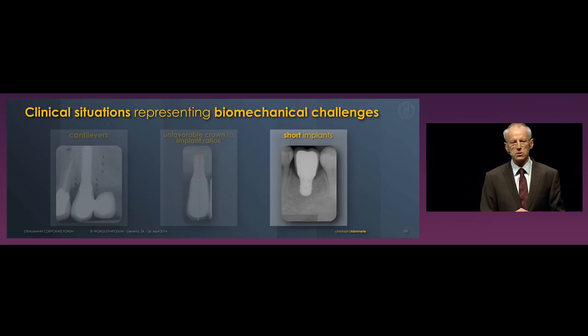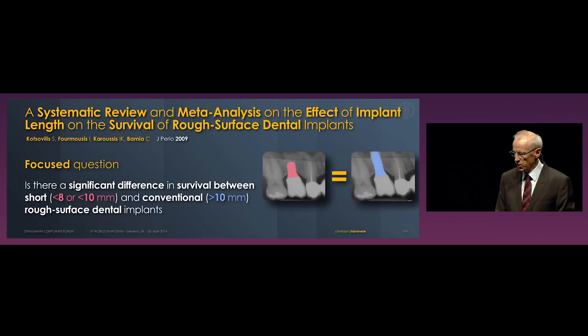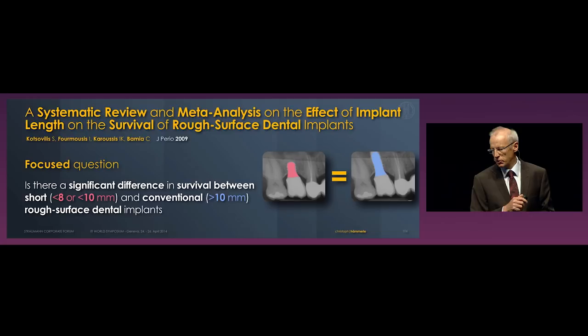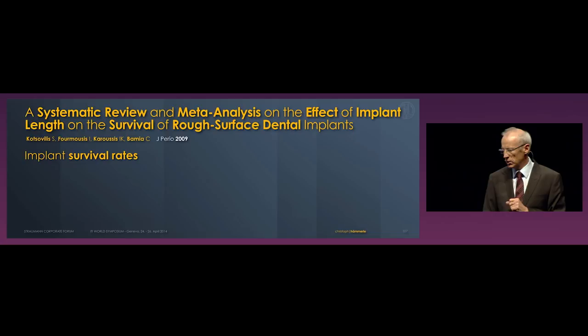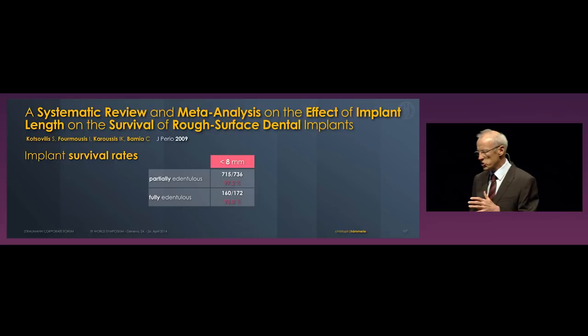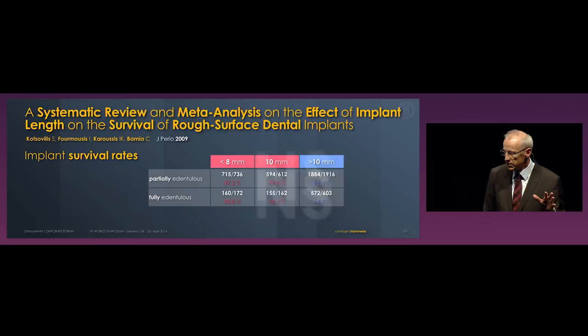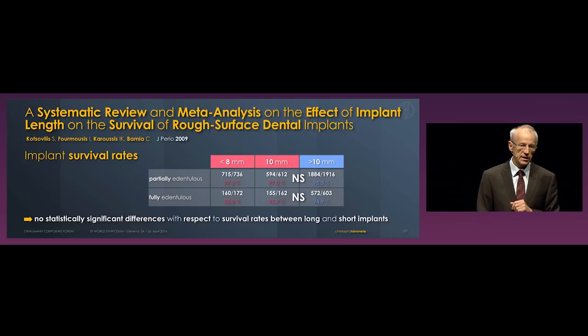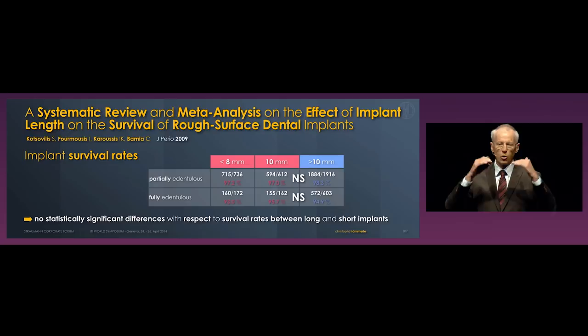Short implants — the next topic. Kozovili's did a systematic review with the focus question: is there a significant difference in survival between short implants — defined as less than eight or less than 10 mm — and conventional implants of more than 10 mm with rough surfaces? They made two groups: partial edentulous and fully edentulous patients. For partial edentulous, less than eight millimeters showed 97% survival, 10 mm showed 97%, and more than 10 mm showed 98%. There were lower survival levels in the edentulous patients, but both groups had no significant differences. Kozovili's and co-workers concluded there is no statistical or clinically relevant difference in survival rates between long and short implants.